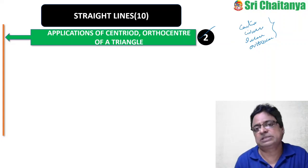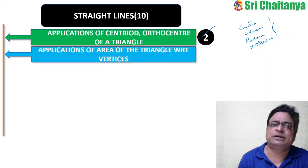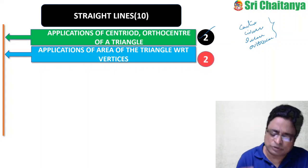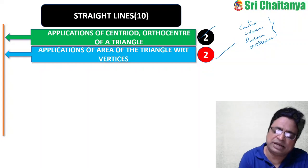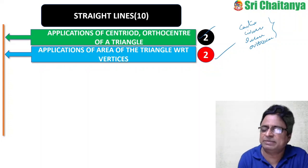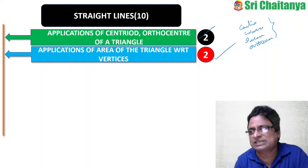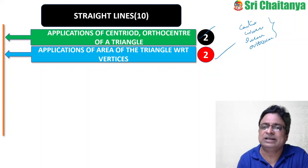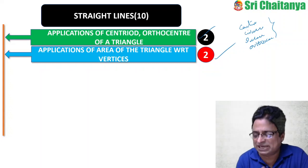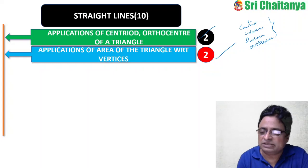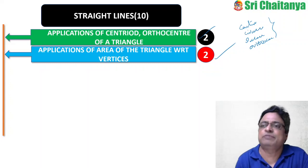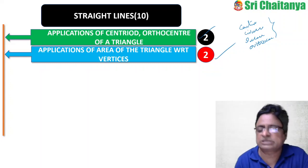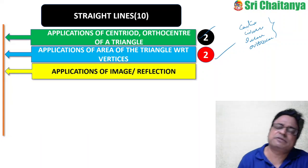Second: applications of area of a triangle with respect to vertices — 2 questions were asked. This covers finding area given three vertices, finding area given three sides, or finding the third vertex when two vertices and the area are given. All three variations are important to practice.